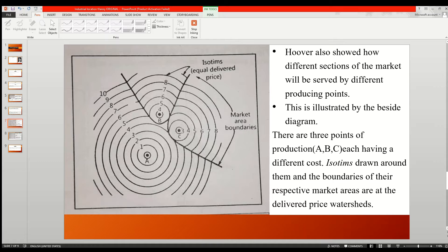If we consider A as a primary producing unit, then the circles or the isotims are delivered prices which are the sum of transport cost and the extraction cost or the producing cost.